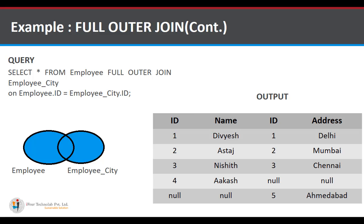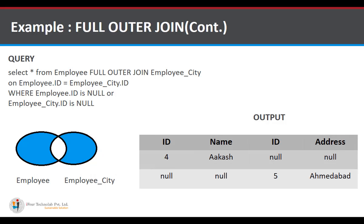The next example shows only the data which is not common — that is, only the unmatched data. The query is: SELECT * FROM employee FULL OUTER JOIN employee_city ON employee.id = employee_city.id WHERE employee.id IS NULL OR employee_city.id IS NULL. This shows only the unmatched data, not the common data of both tables, as visible in the output.